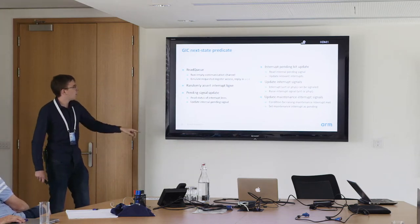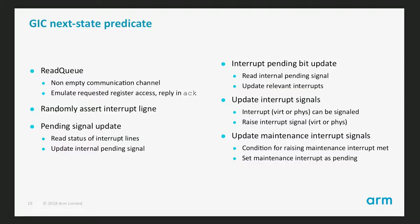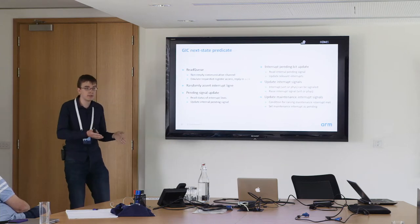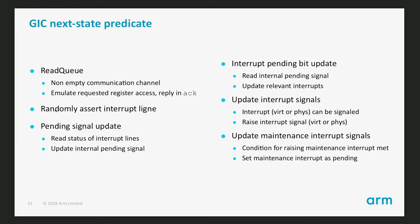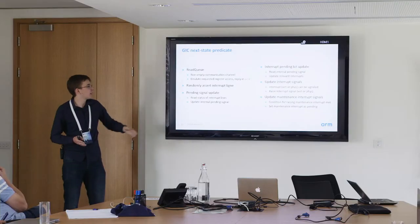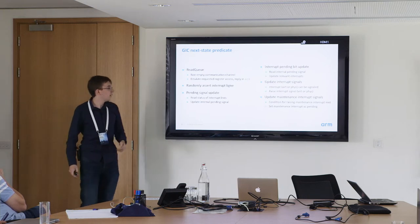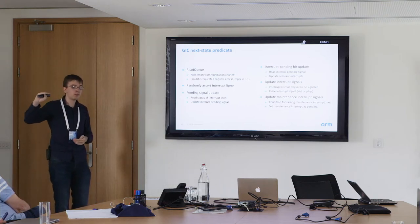This is an overview of the next steps that can be taken by the GIC model. Besides the communication channel step, one step randomly asserts an interrupt line — flipping those boolean signals coming into the GIC. There is also a pending signal step, since interrupts depend on edge or level transitions. Spotting level transitions is simple but for edges I need a previous value, so I have a step that samples the current and previous line values. I can update the pending bit based on hardware signal transitions, and update the interrupt signals going to the CPU depending on priorities and pending states.